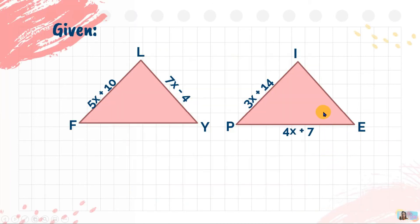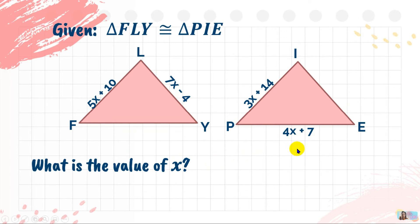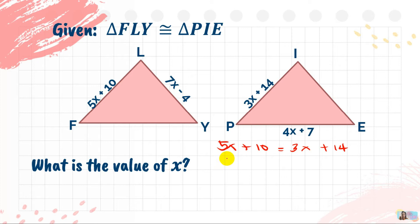For number 1 of the Difficult Round: triangle FLY is congruent to triangle PIE. Side FL is 5X plus 10, side LY is 7X minus 4, side PI is 3X plus 14, and side PE equals 4X plus 7. First question: what is the value of X? All parts have the variable X. We use the pair FL and PI, which are congruent corresponding sides. So: 5X plus 10 equals 3X plus 14.